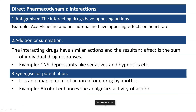Coming to antagonism — the interacting drugs have opposing actions. For example, acetylcholine and noradrenaline have opposing effects on heart rate. Adrenaline increases heart rate and acetylcholine decreases it. When drugs with opposing actions are given together, it causes an interaction known as antagonism.